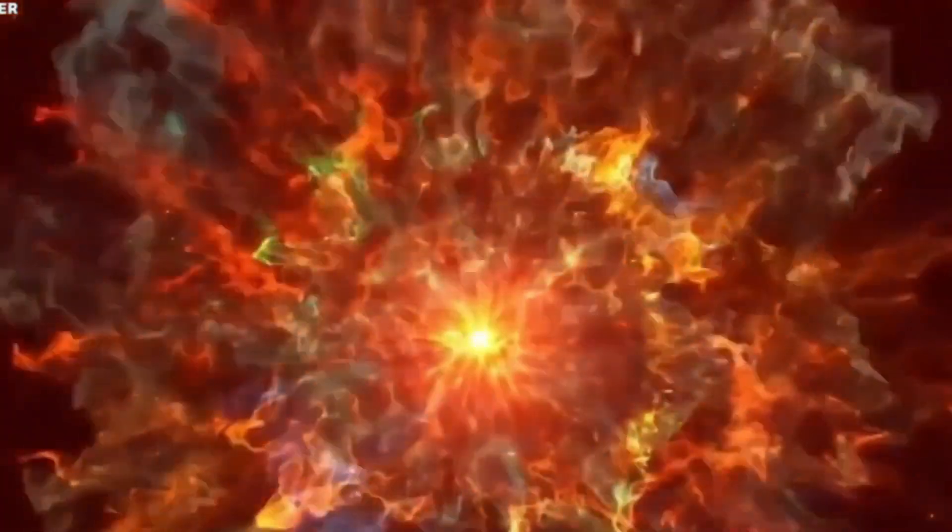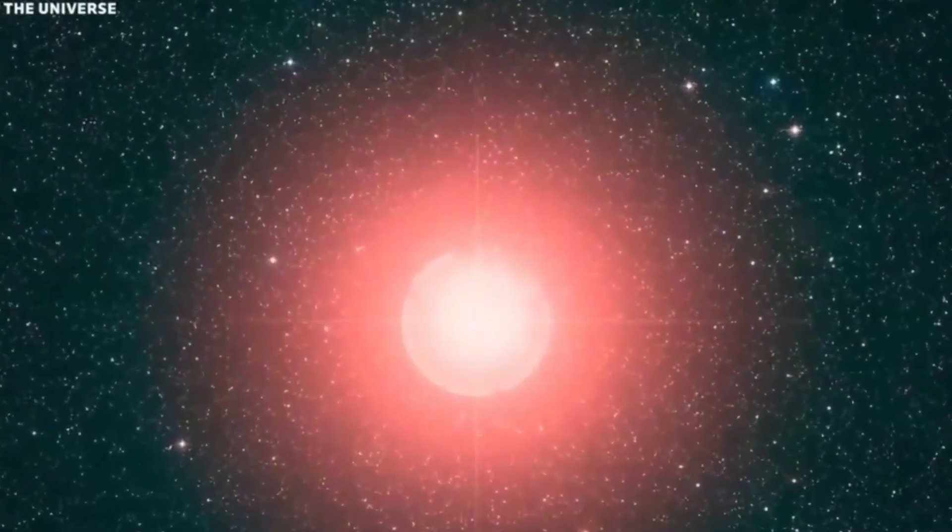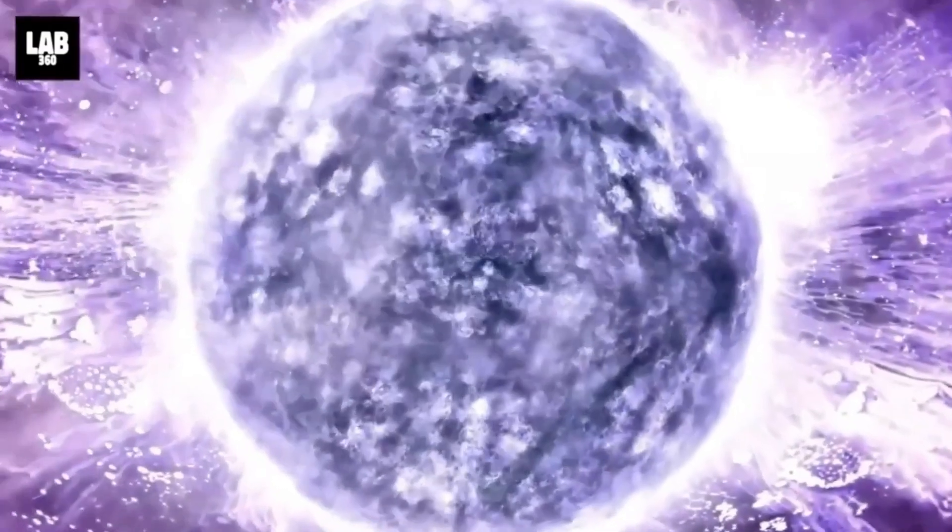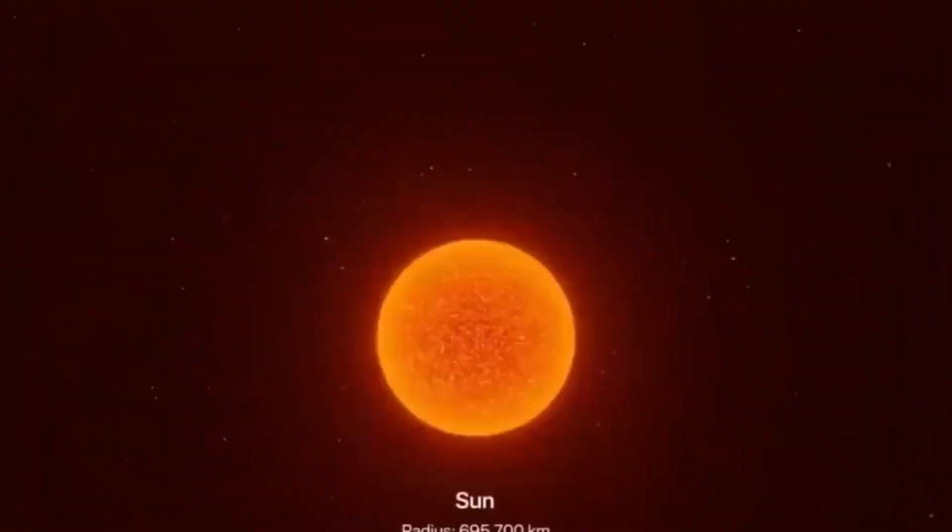One possibility is that Betelgeuse has expelled a massive amount of material from its outer layers, creating a shock wave that has temporarily brightened the star. This process, known as a stellar outburst, is not uncommon among aging supergiants, but rarely occurs on such a dramatic scale.